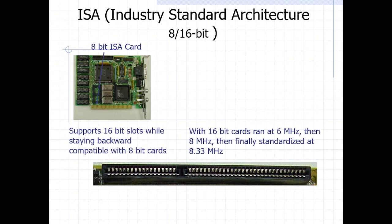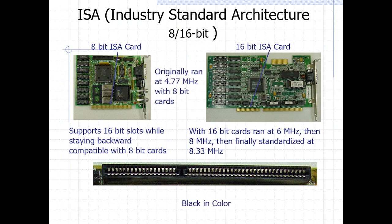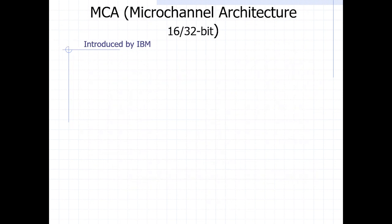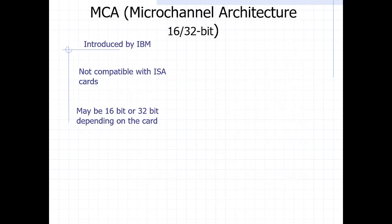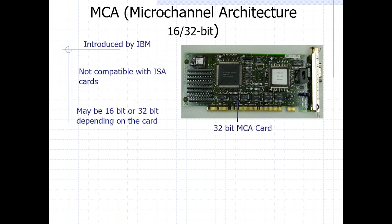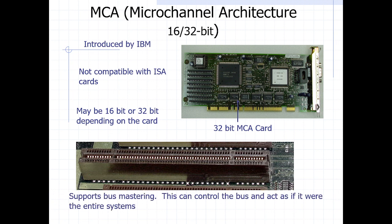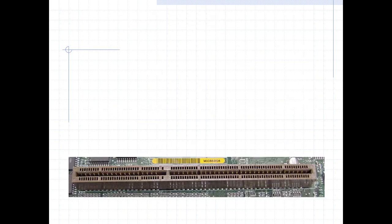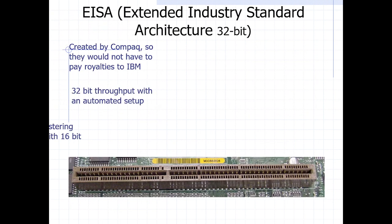The ISA is black in color — these are the expansion cards that can be used within the ISA bus, including the one that supports 8-bit and the one that supports 16-bit. Then we had the Micro Channel Architecture — the MCA. This was another expansion card, but it was not compatible with the ISA cards. It was a product of IBM and used the 16-bit and 32-bit card. It is brown in color, but you won't find it in the current computer system.